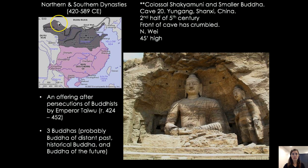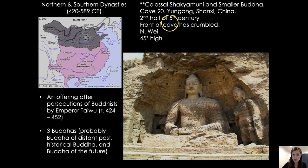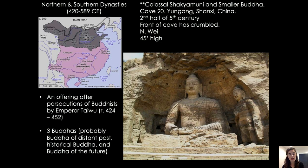This comes from the Northern Wei dynasty. The cave structure is located in the Yungang Caves near Shanxi in China, from the second half of the 5th century. The front half has crumbled. This is not as large as the colossal Bamiyan Buddha, but it is 45 feet tall. The historical Buddha is at center, and this was said to have been an offering after persecutions of Buddhists by Emperor Tai Wu. As noted, some emperors were more accepting of Buddhism and some actively persecuted those who were following it.